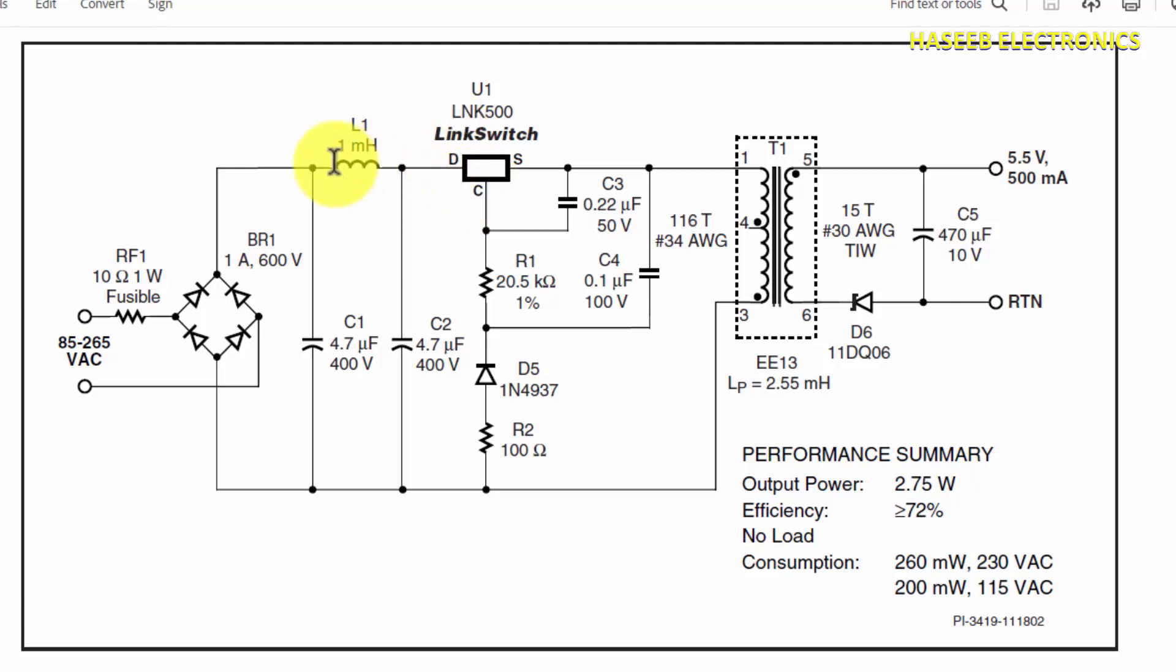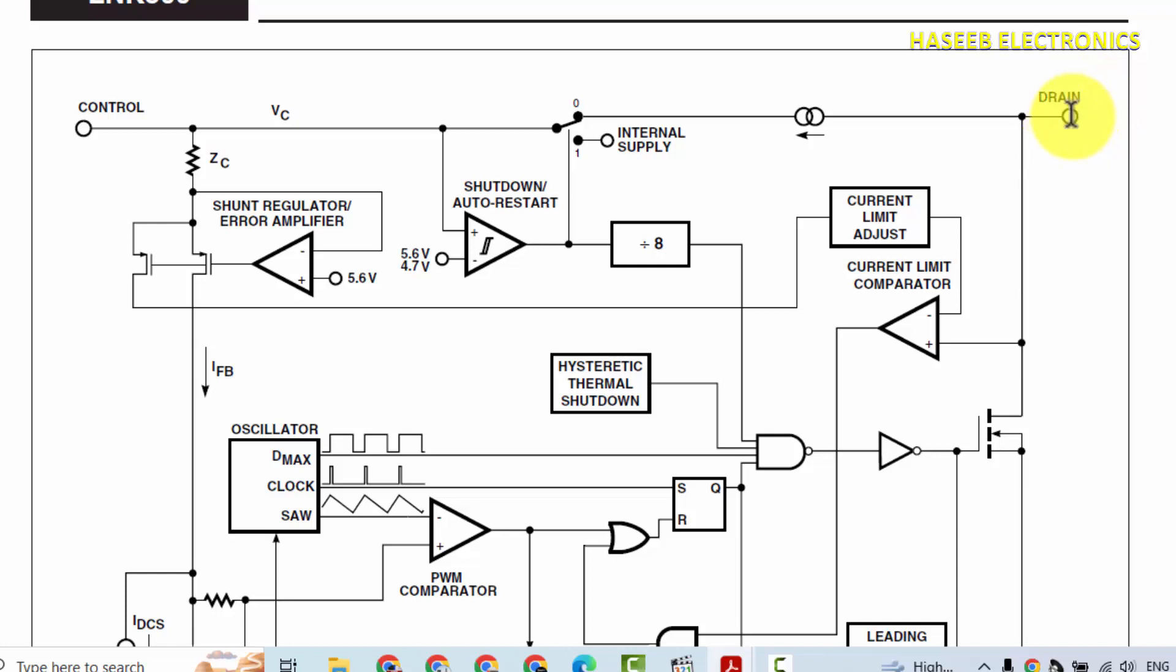The internal structure of this IC is similar to other ICs. When the drain pin is connected to the positive terminal, at that time the internal charging circuit will charge the outside capacitor that is connected at the control pin.